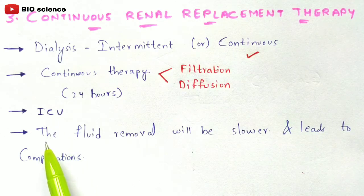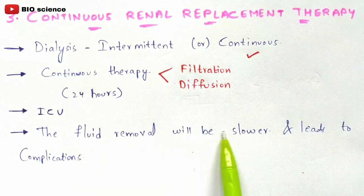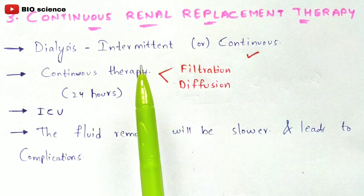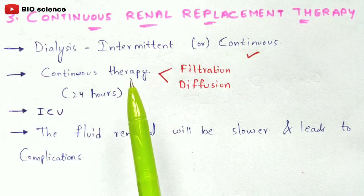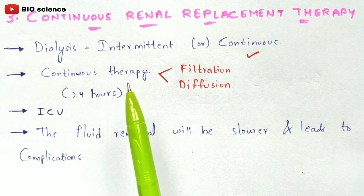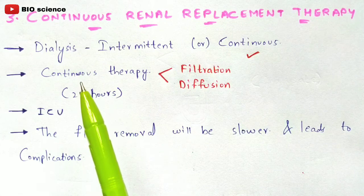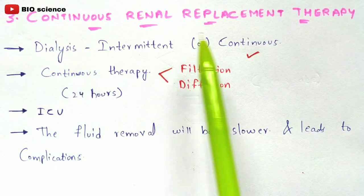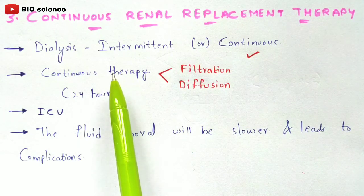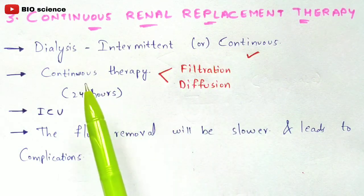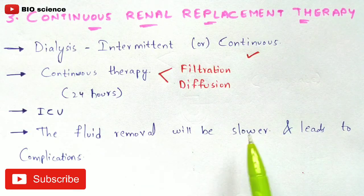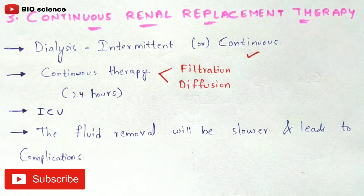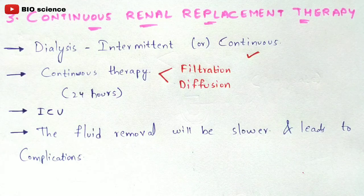CRRT is selected when a patient's kidneys are totally failed — up to 95 to 100%. Fluid removal is slower because the kidneys are completely damaged. Doctors may recommend kidney transplantation or CRRT in such cases. CRRT can lead to serious complications including coma or death, and kidney transplantation, while highly effective, is very expensive.